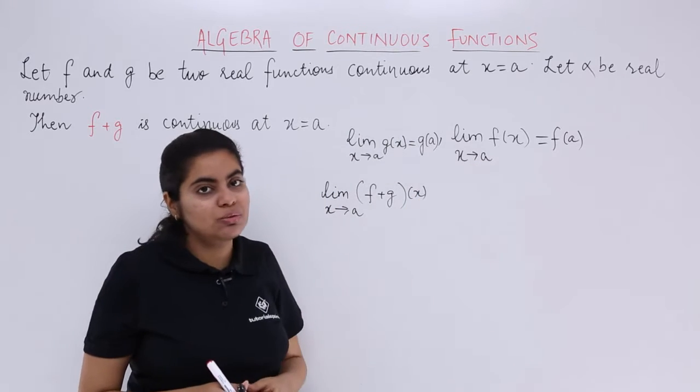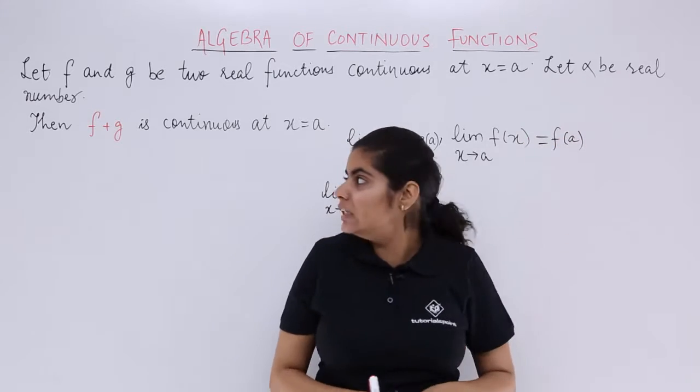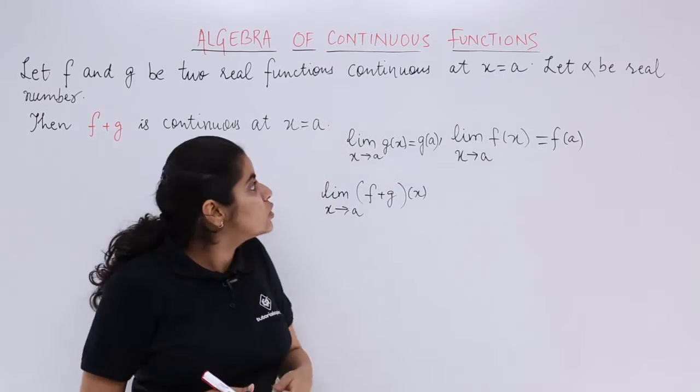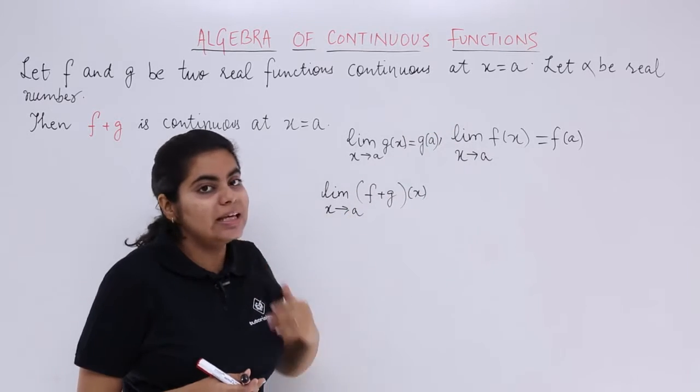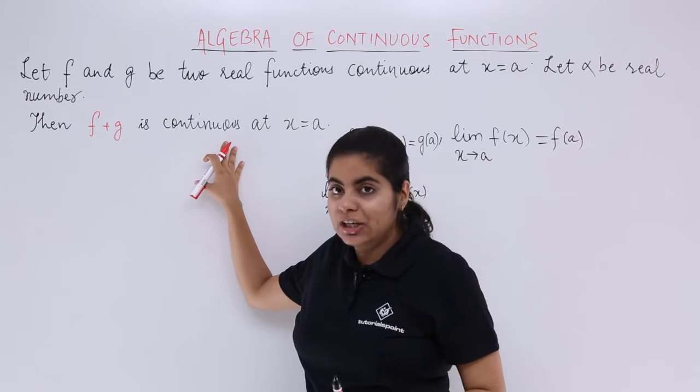Now this is the story that these two things exist. What is written over here? Let alpha be a real number. Alpha is a real number, right? So alpha can also be there. Now, what is there? Then f plus g is continuous.